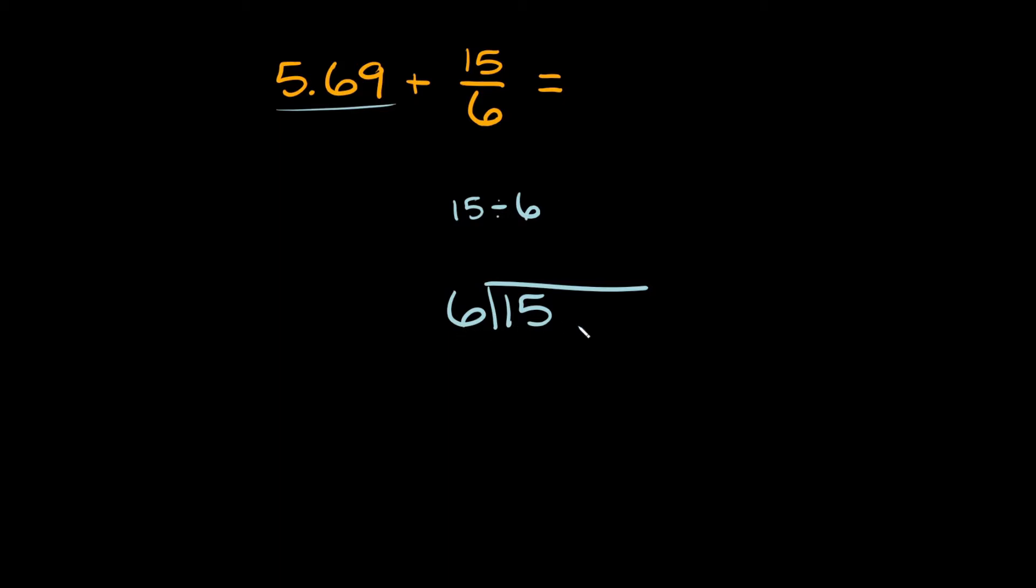Now, 6 goes into 15 how many times? Two times, right? And then 2 times 6 is 12, and then we'll subtract right here. 15 minus 12 is 3, and then we don't have anything over here, so we'll put a 0 and bring that straight down right there.